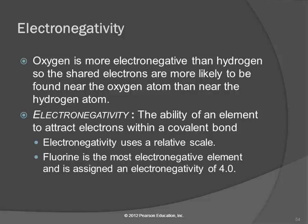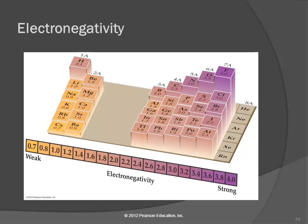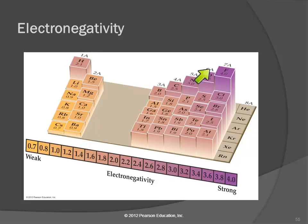Fluorine is the most electronegative. Here's a table showing these electronegativities and we can see there's a periodic trend. Cesium has an electronegativity of 0.7 - the lowest - and as we go across a period, electronegativity tends to increase. If we go down a group it tends to decrease. So fluorine, up at the top right, is the most electronegative.